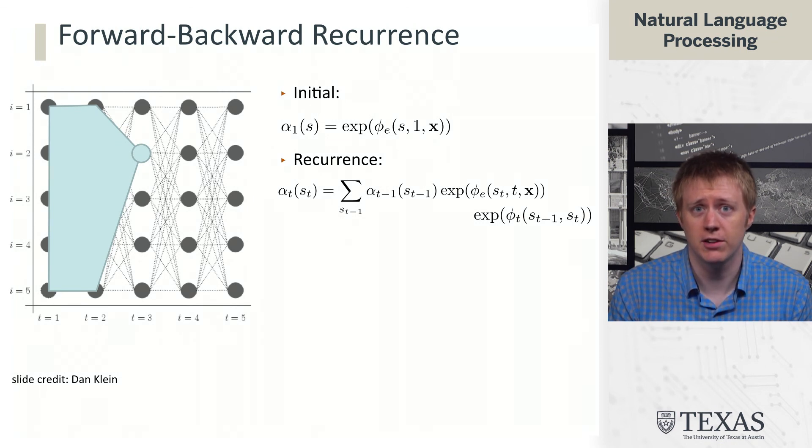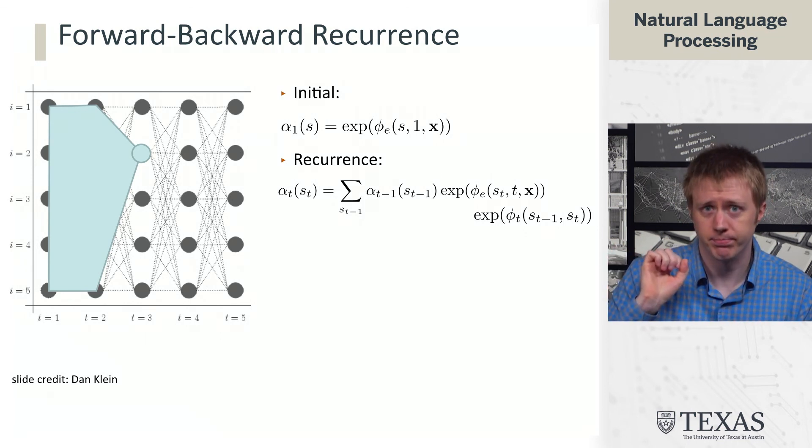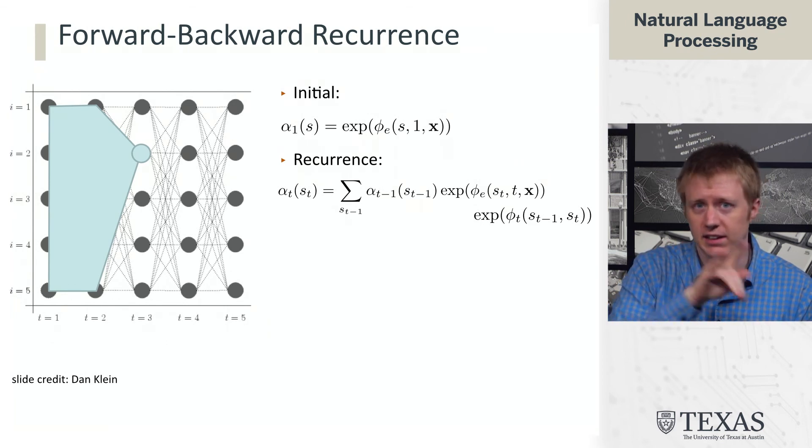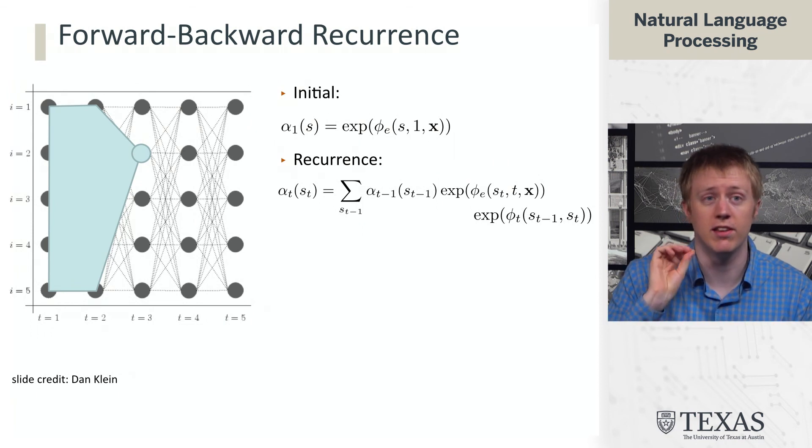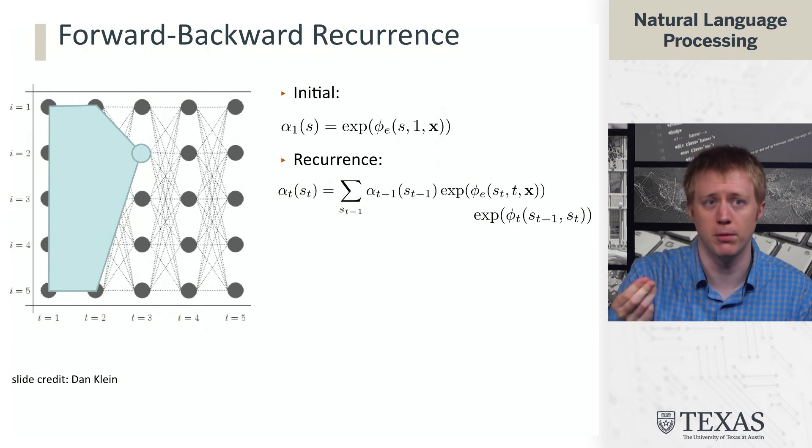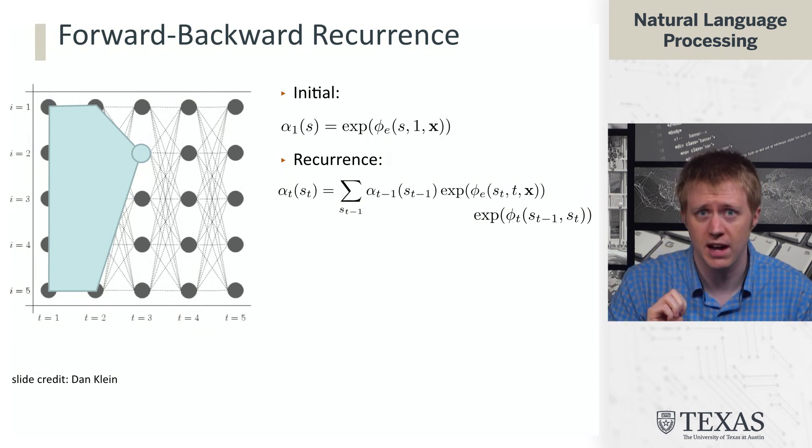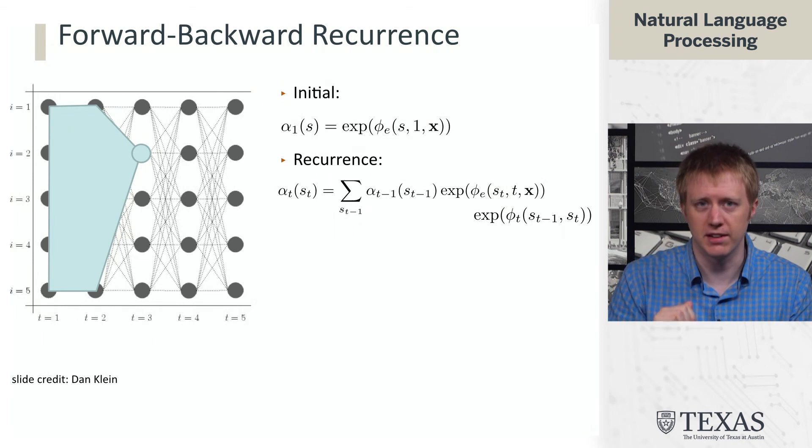We have alpha t minus 1, so the alpha values from the previous time step associated with this state that we're looking back at, s t minus 1. And then we have our emissions at the current time step, so this could technically be factored outside of the sum as well, as well as our transition from the previous state to the current state. So again, this looks very much like Viterbi with the main differences being that we've swapped probabilities for these potentials now, and we're summing instead of maxing.